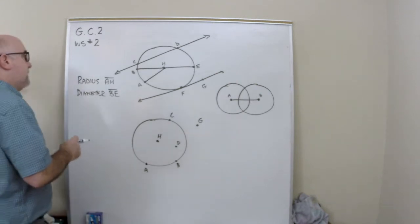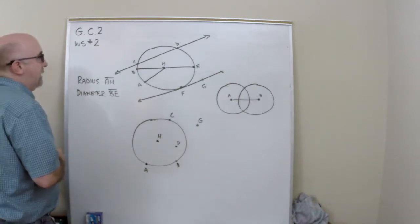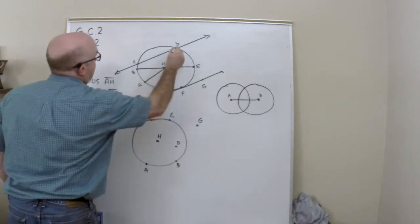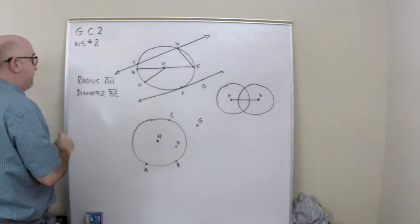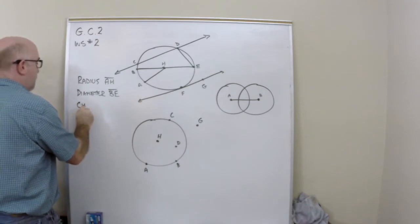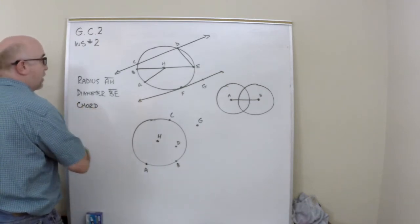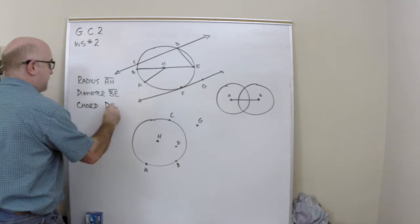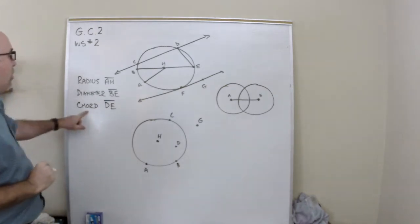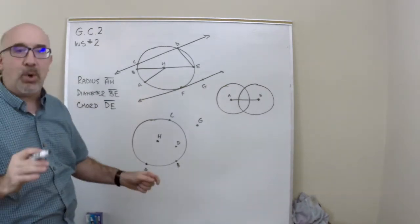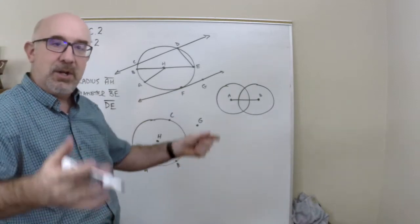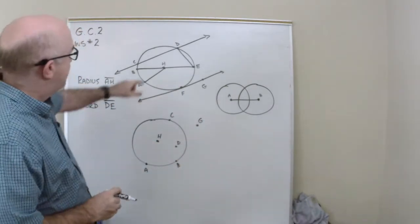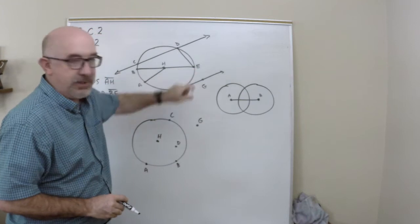Let's add in another segment here. Let's add this one in, DE. I want to add a new word. I think this one would be new to you is a chord, D to E. Now, a chord would have both of its endpoints on the circle. D is on the circle, E is on the circle.